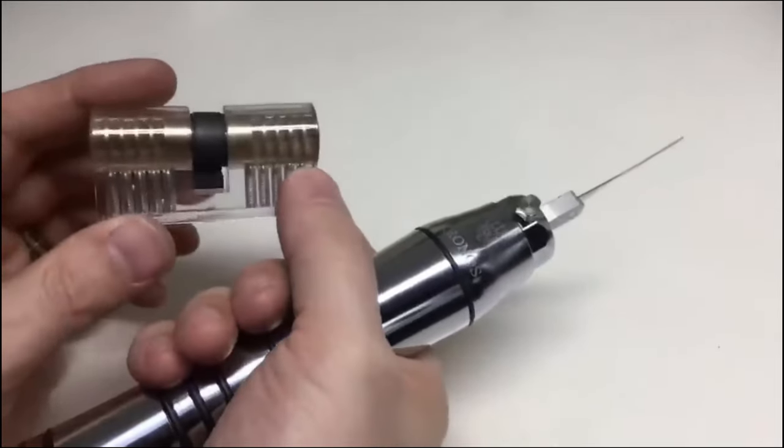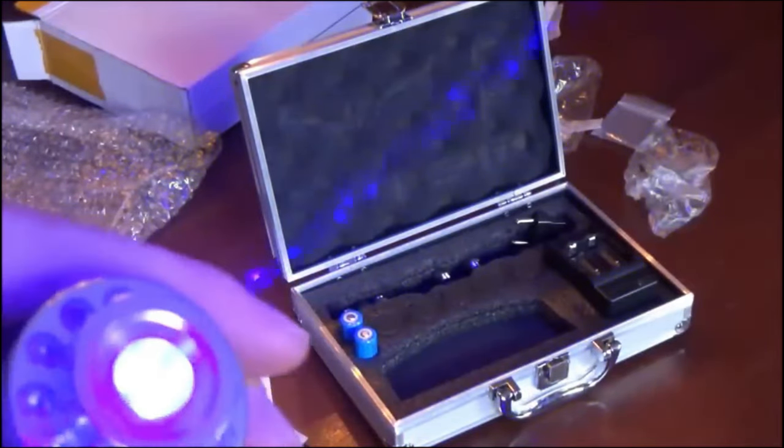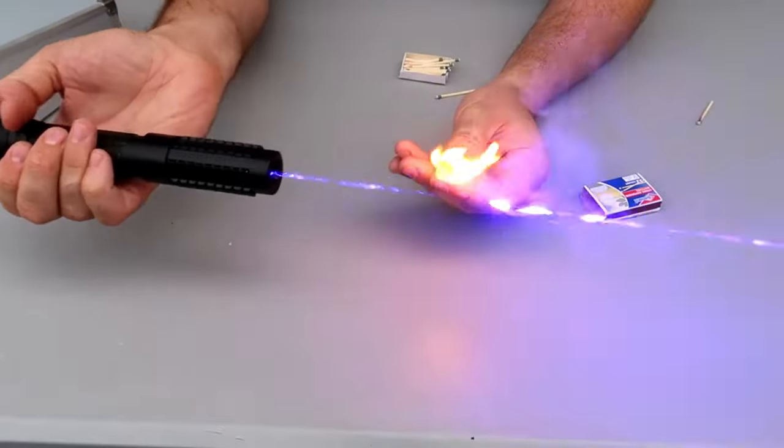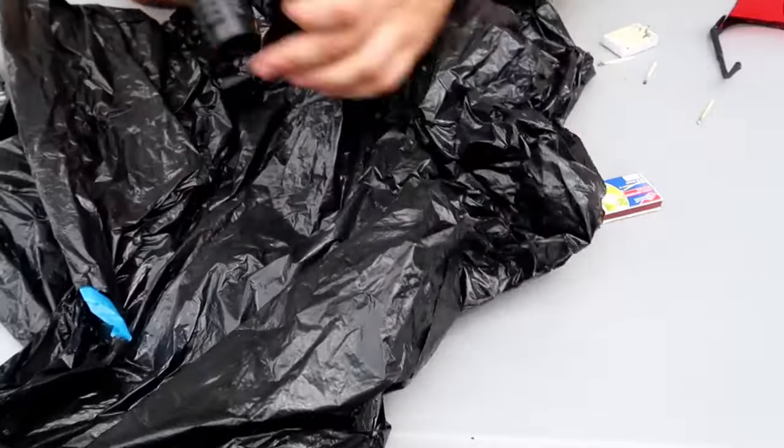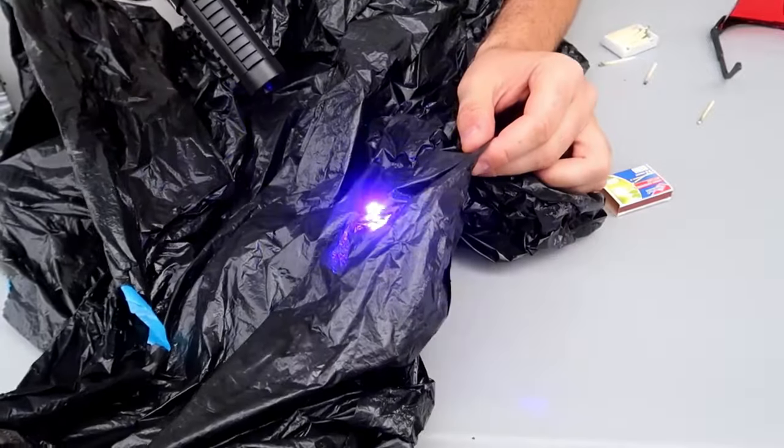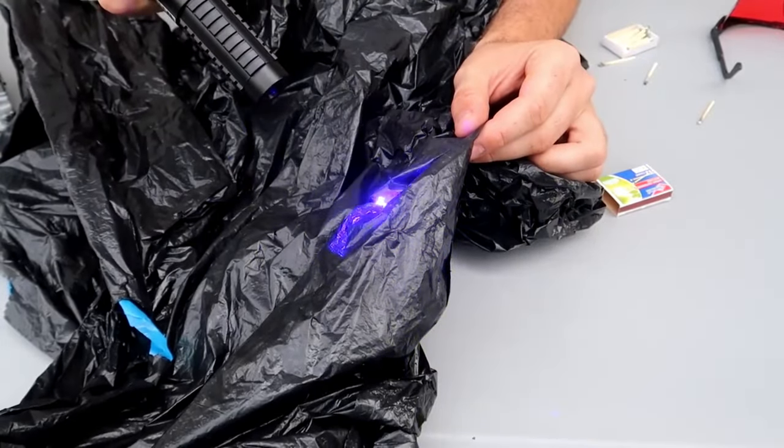The journey through these illegal black market gadgets continues with the Swan High Power Blue Light Pointer, a laser pointer evoking images of a battle between Jedi and Sith. Its impressive power allows it to puncture through materials like folded yoga mats or shirts.